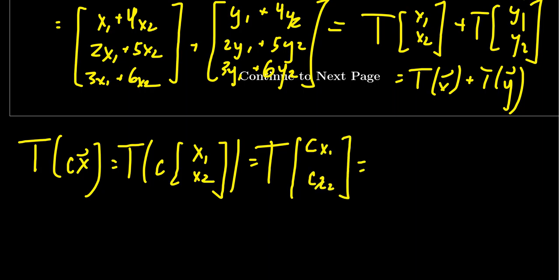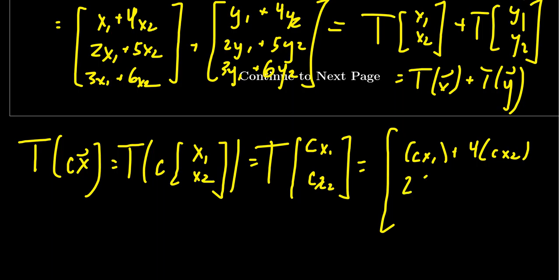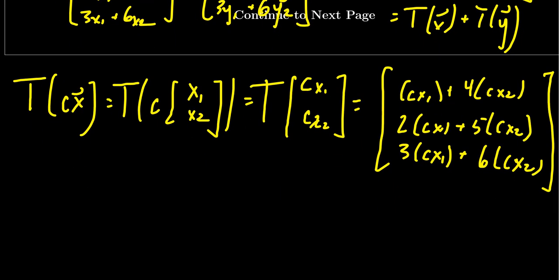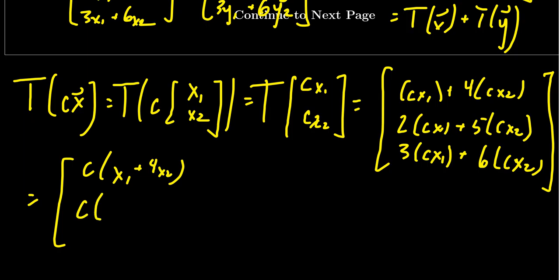Let's apply the definition of the function here. Our function takes the first entry CX1 and adds to it 4 times the second input CX2. For the second output, we get 2 times CX1 plus 5 times CX2. For the third output, we get 3 times CX1 plus 6 times CX2. Notice that everything in each entry is divisible by C, so we factor that out: C times X1 plus 4X2, C times 2X1 plus 5X2, and C times 3X1 plus 6X2.